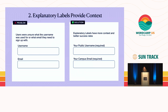Number two: explanatory labels help provide more context. I worked on a project where users signing up for an academic portal were confused about what email to use. Instead of just saying 'username,' use a more explanatory label like 'your public username,' which lets them know that others on the platform will see it. Similarly, 'your campus email' lets users know they need their campus email rather than a personal one. Making this change really helped with sign-up retention and support requests.